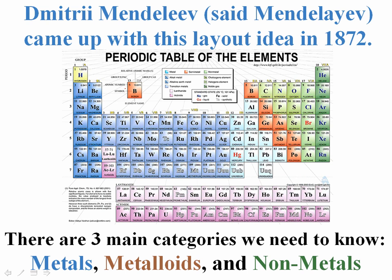And he came up with this layout, Mendeleev came up with this layout basically in 1872, and he did create the three main categories at that point. And the three categories were the metals, the metalloids, and the non-metals. So let's look at where they actually fall on the periodic table.